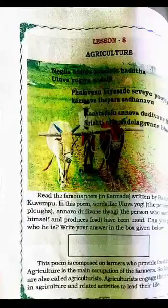I started the lesson with Kuyempu's poem: 'Negila ididha oladalu uluwara yogiya nodali.' It is a very famous poem by Rashtrakavi Kuyempu. In this poem, we learn about farmers — how they work, how they sacrifice for others, and how they produce food for people. The farmer is very important in society and for the country.